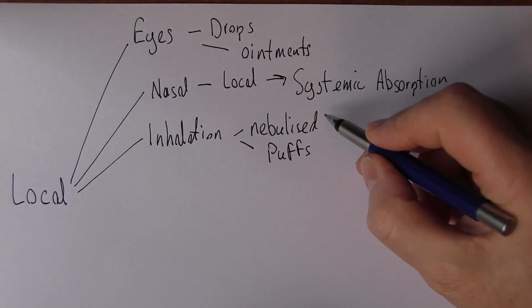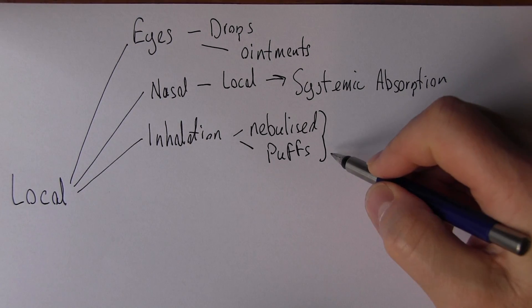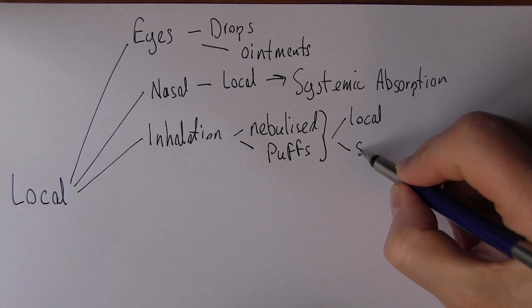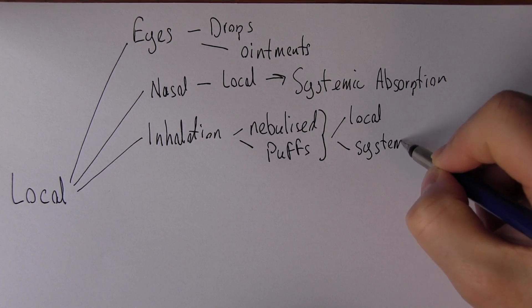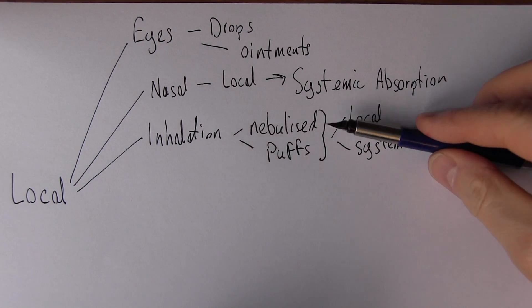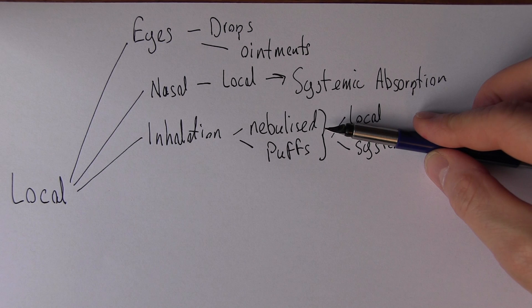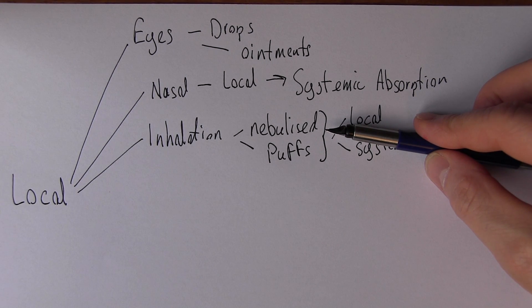Again, bear in mind that yes, these are going to work locally, but they can also have systemic effects. For example, if we give nebulized salbutamol and the patient's on a cardiac monitor, we'll normally notice an increase in heart rate. There'll be a degree of tachycardia because salbutamol is a sympathetic stimulant—that is how it dilates the bronchial passages.